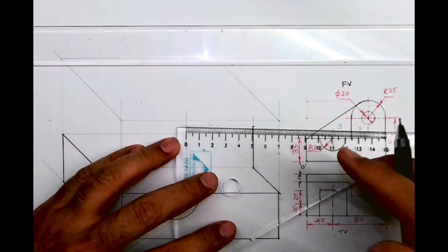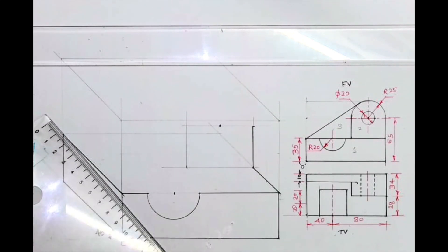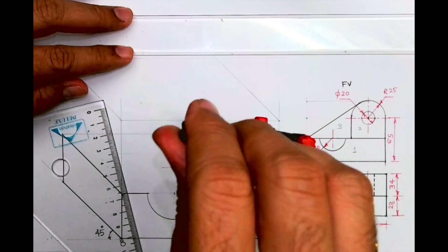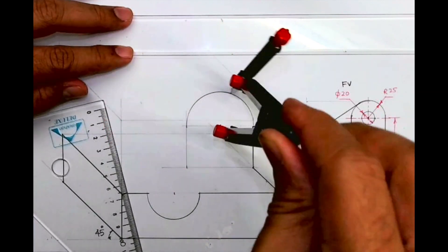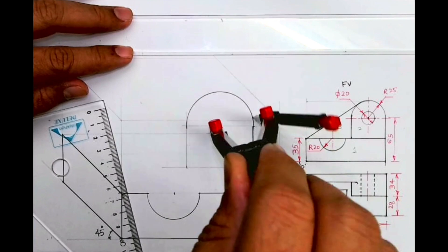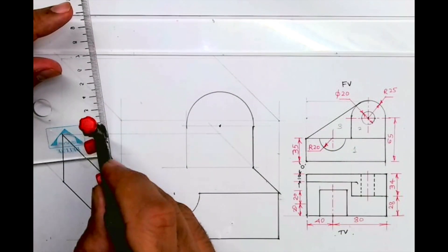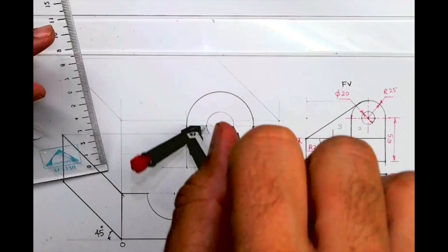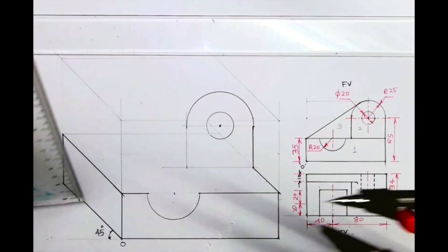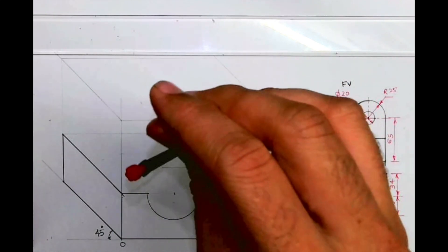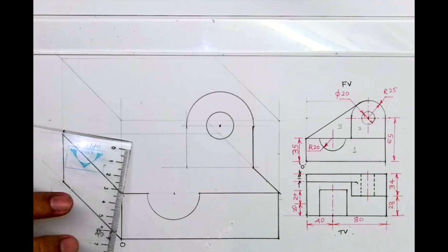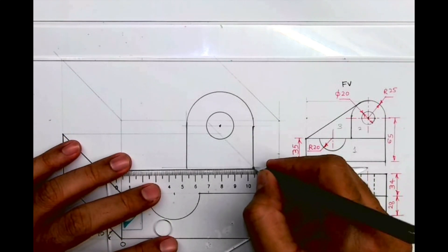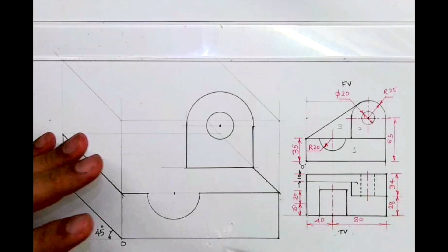Now how much is this radius? Radius 25. Take the midpoint, then take radius 25 and draw an arc. Then you have radius 10, diameter 20 — so that you can draw. We got part 2.